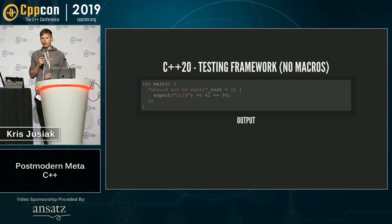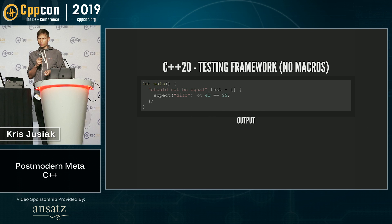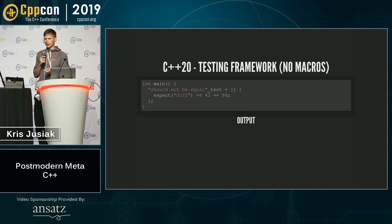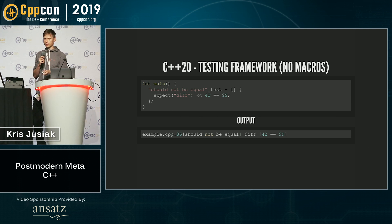One more thing we can do is implement testing frameworks in C++20 with no macros, so we don't have to dig into how to find bugs and errors in them. With source_location, we get the error output which shows us all the information we passed through to our test case.